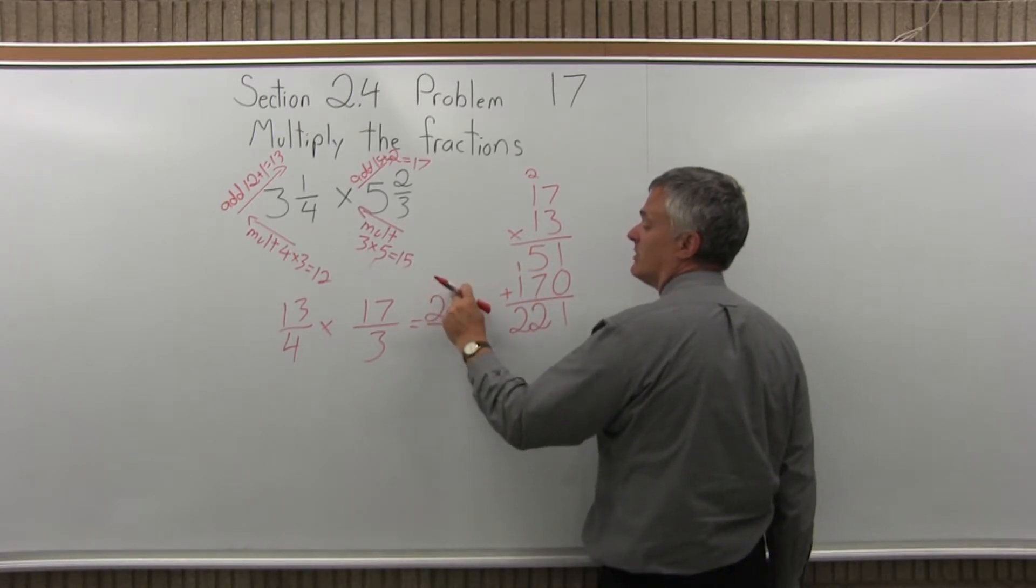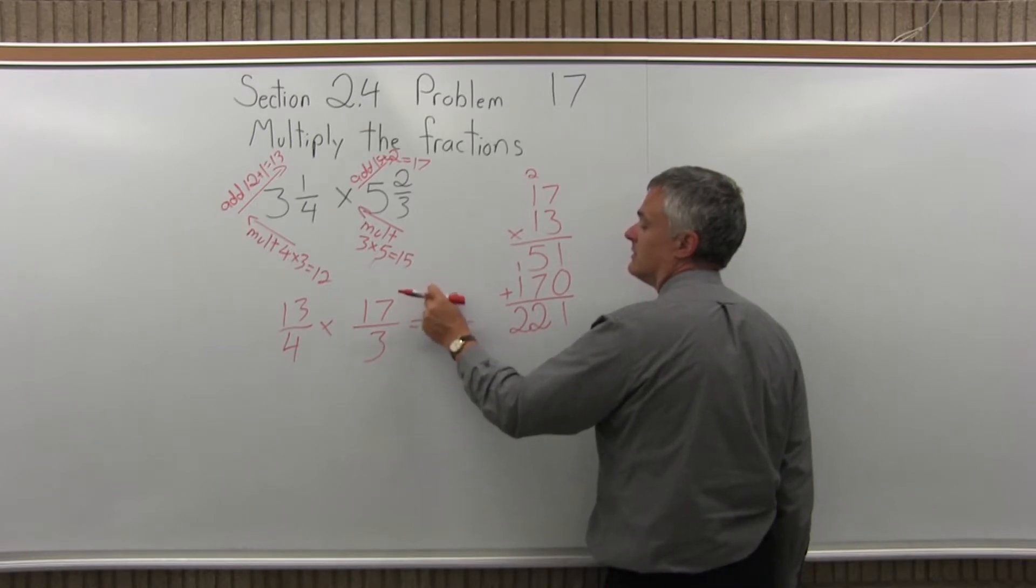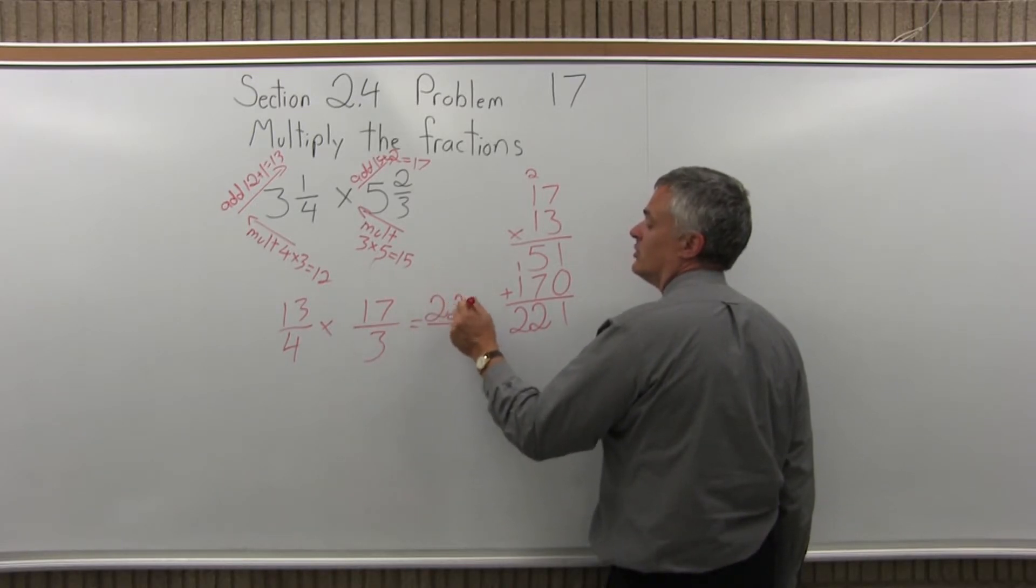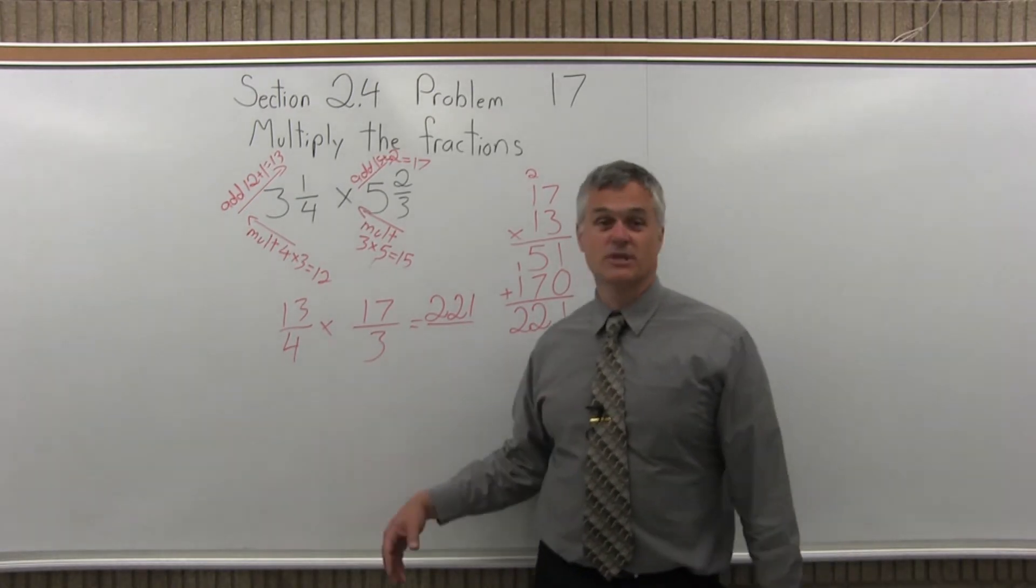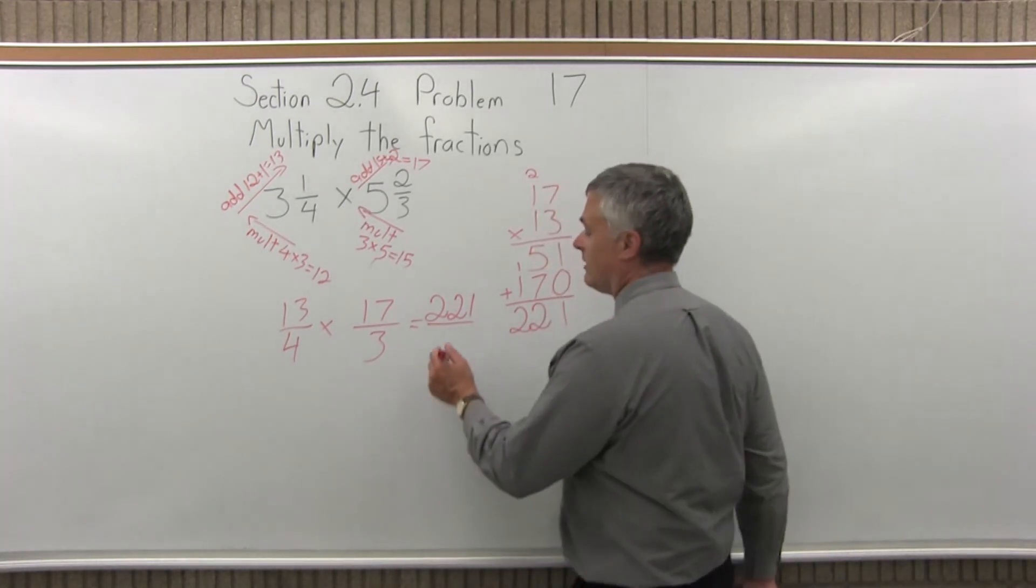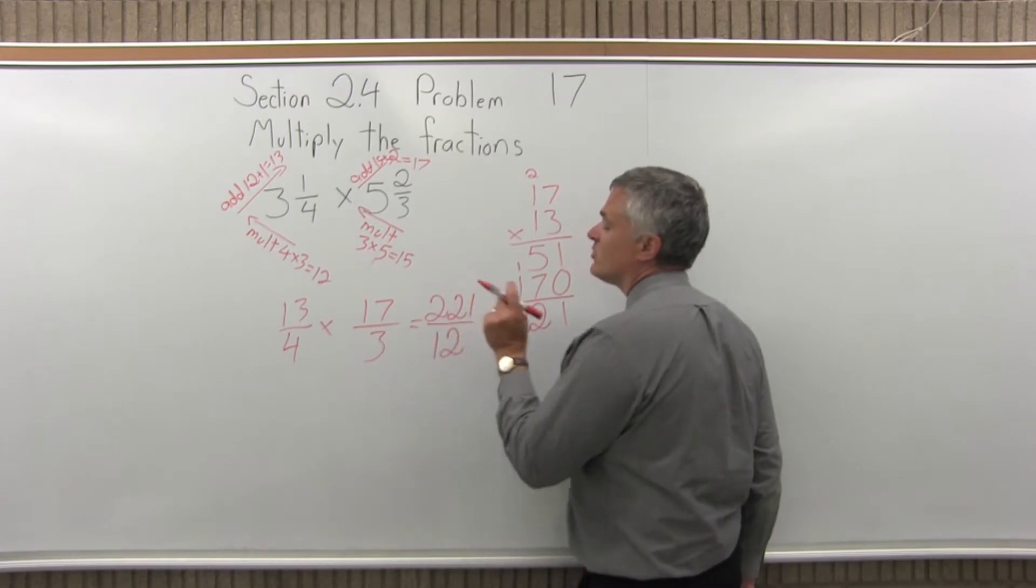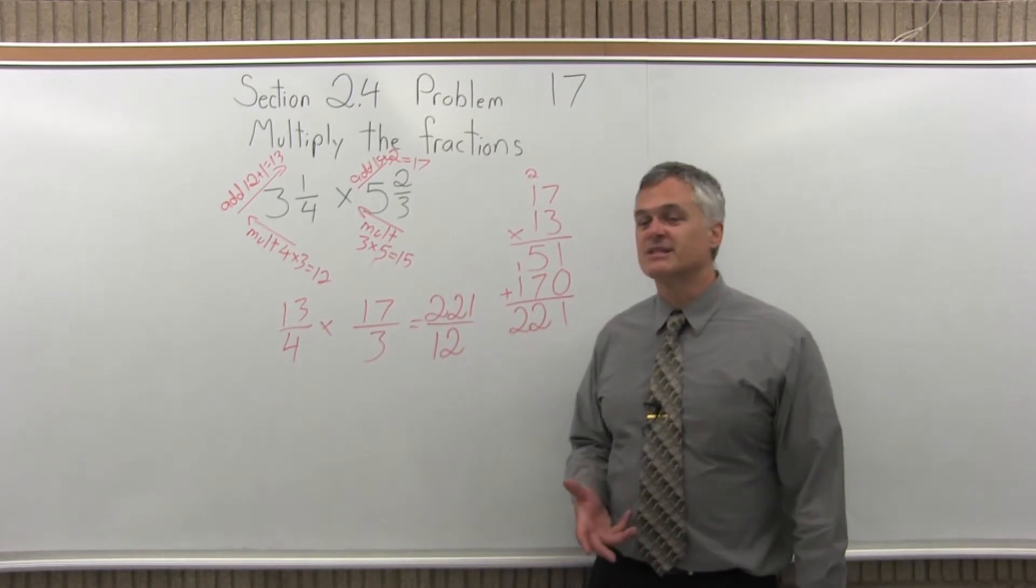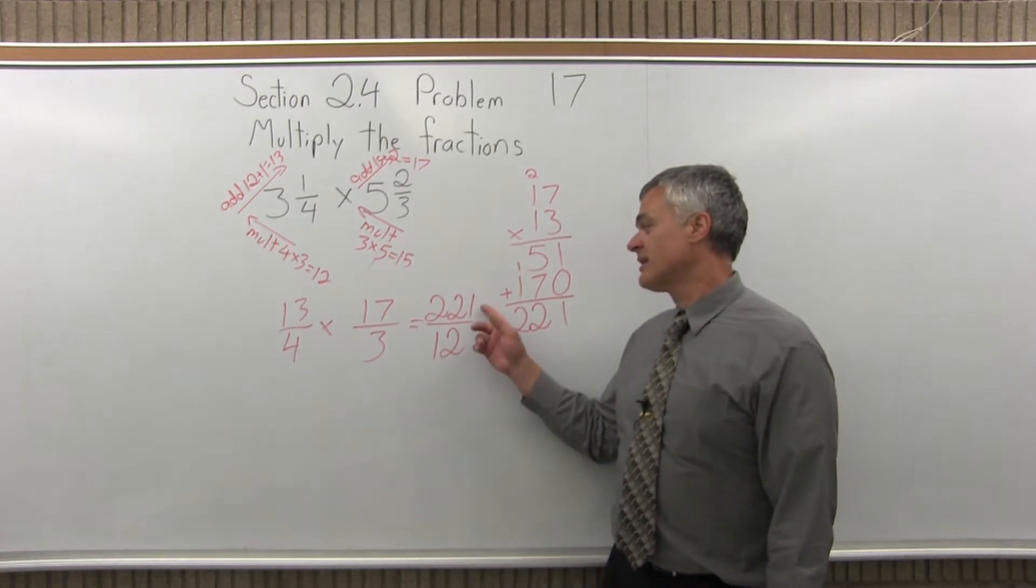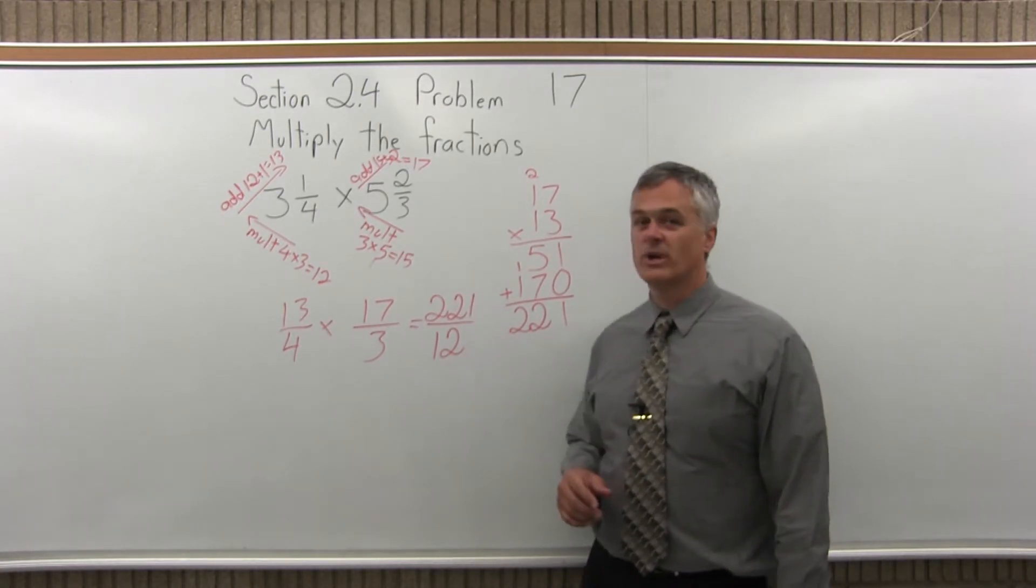That will be my numerator, 221. Now, the denominators are much easier, 4 times 3. That I can do without writing it out, that's 12. So my answer is 221 over 12, and if I try to reduce that, I'll see that it doesn't really reduce. There's nothing I can find that will divide into the 221 and the 12.